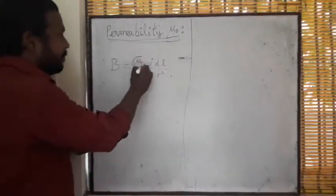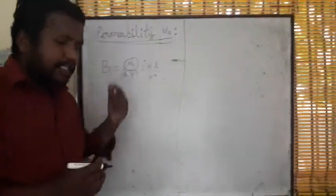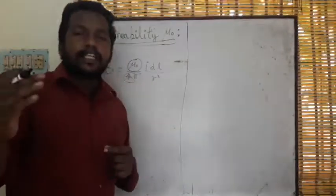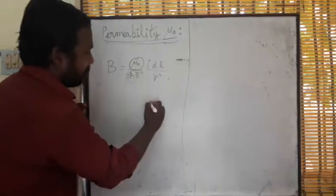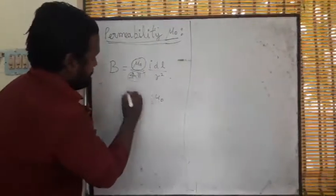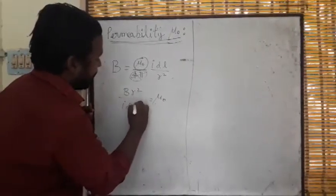We are going to find mu naught. 4 pi is a constant, no need to take it. When we are finding the dimensional formula, dimensional constant values can be removed. So we are finding mu naught, that means B times R squared divided by I D L.